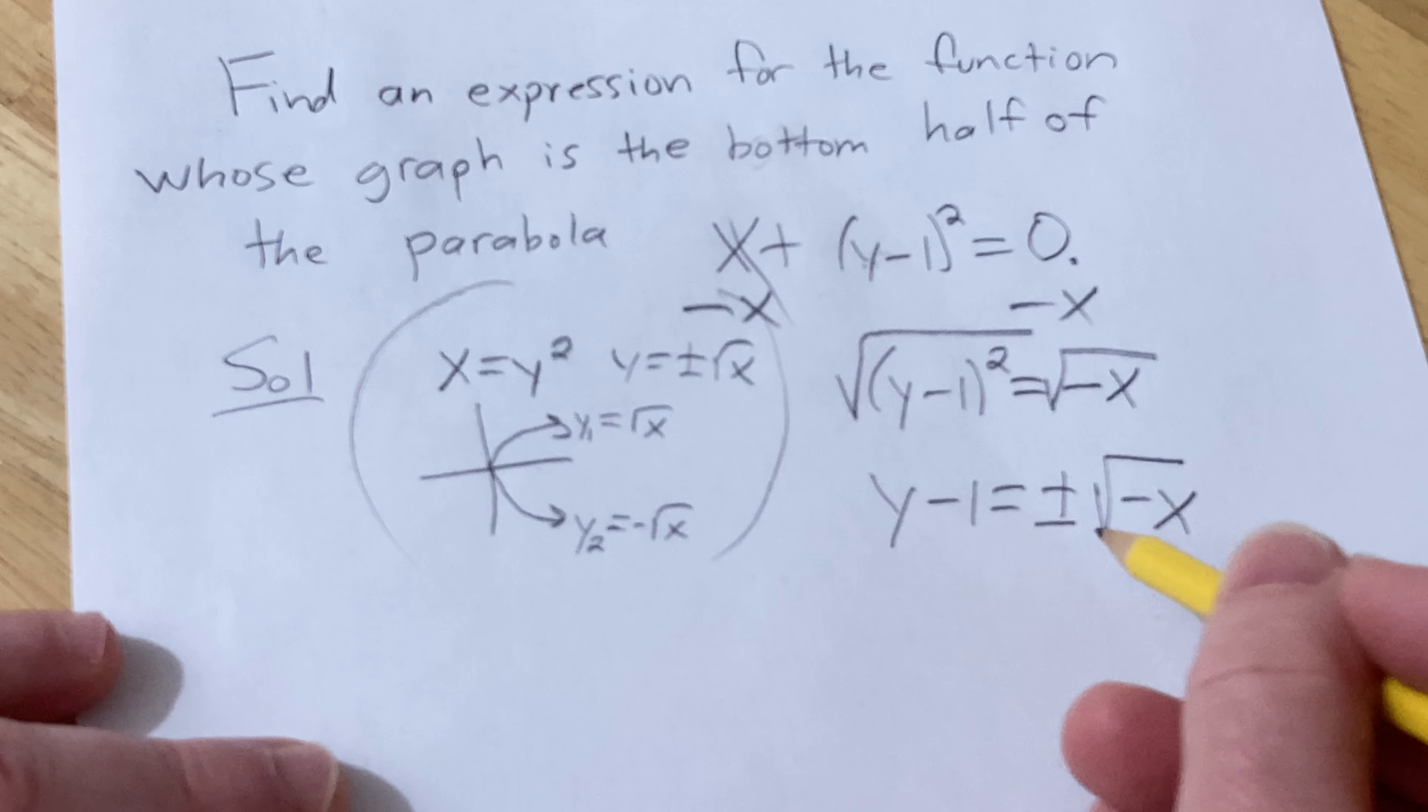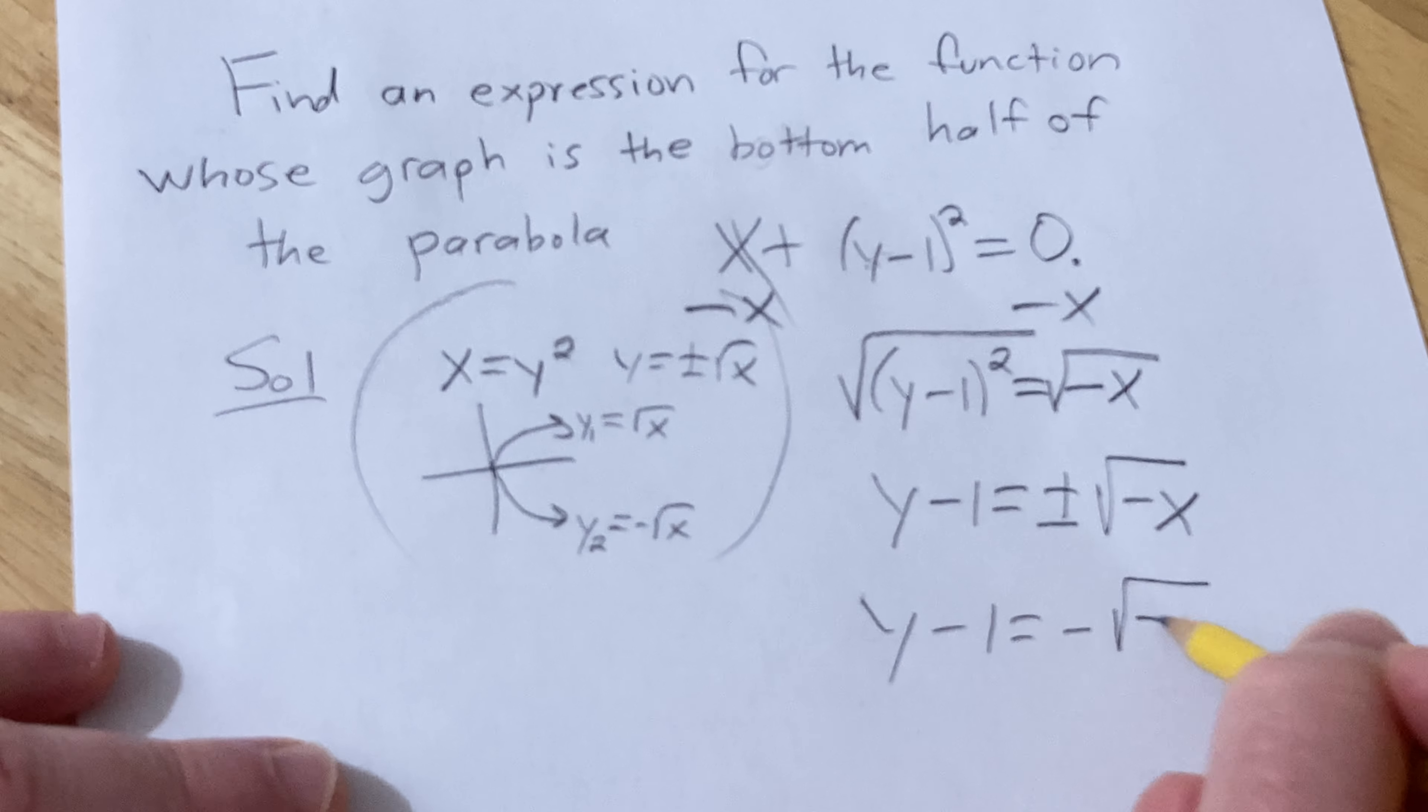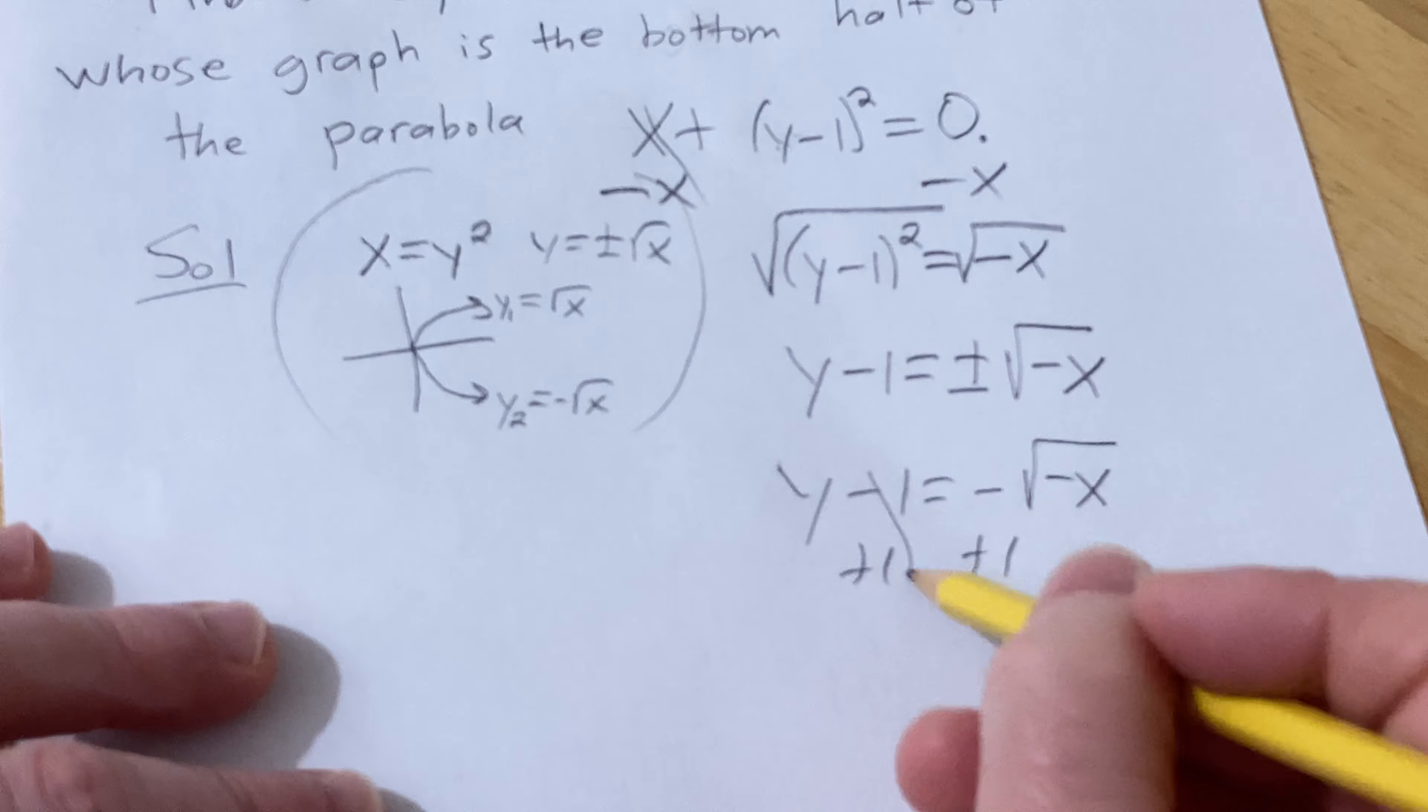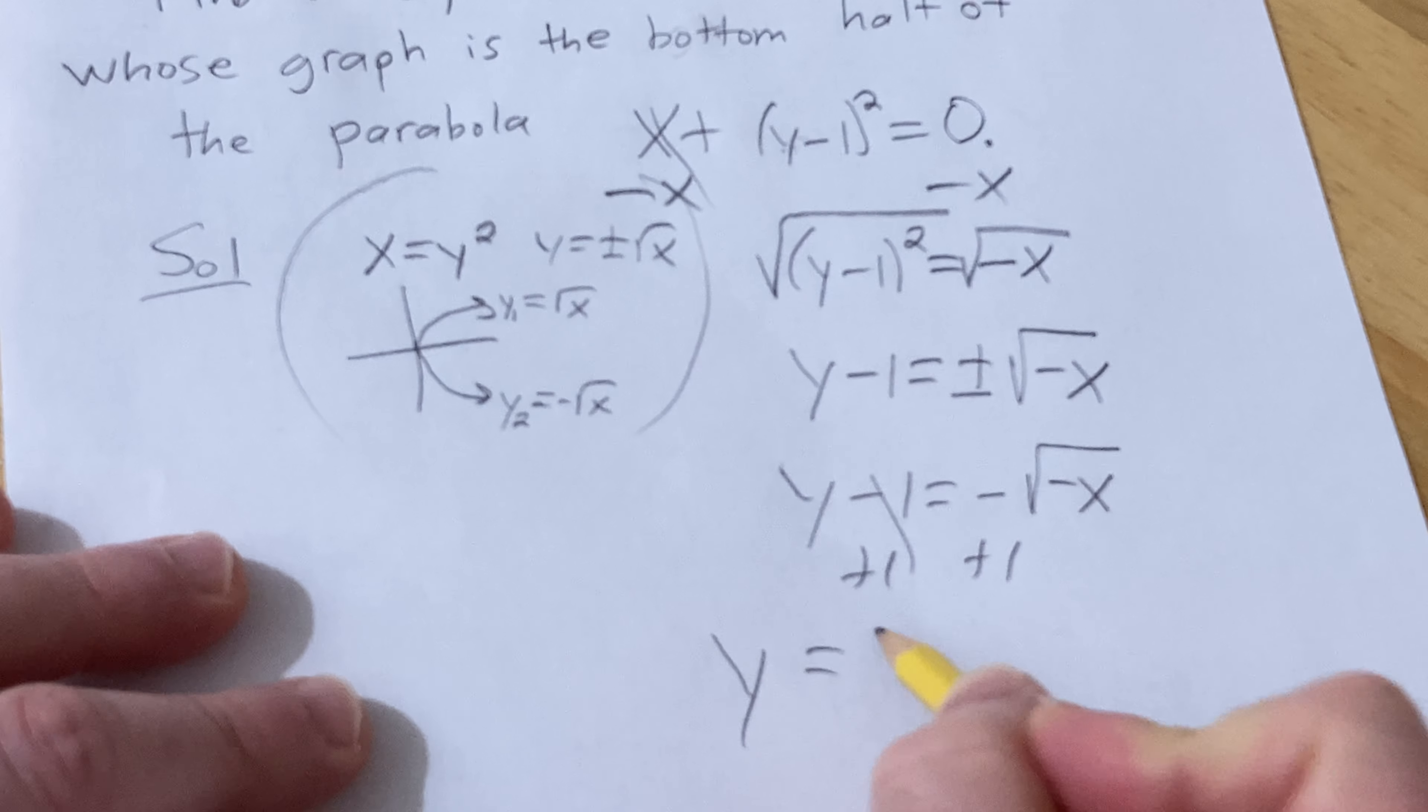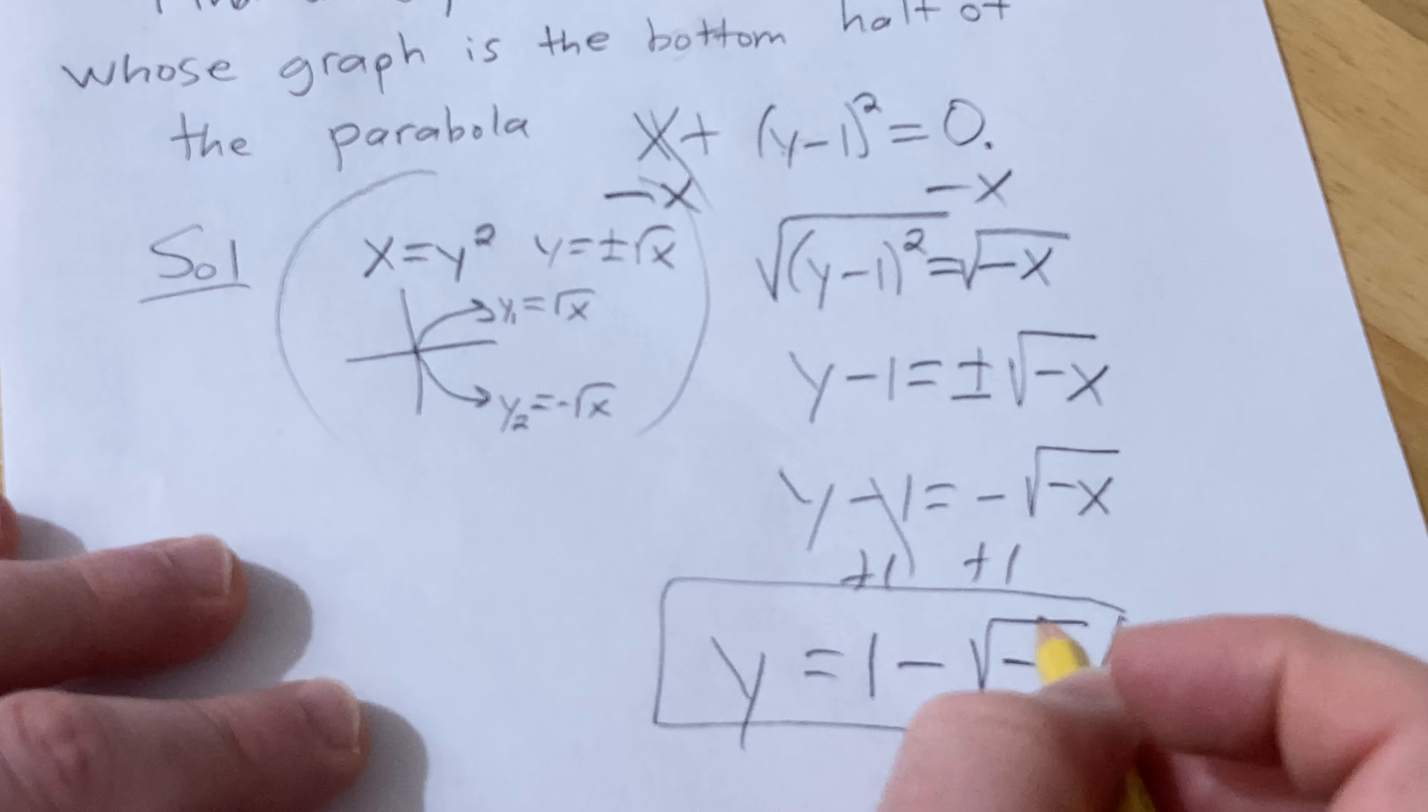And then we just add one to both sides. And that would be the equation that gives you the bottom half of the parabola.